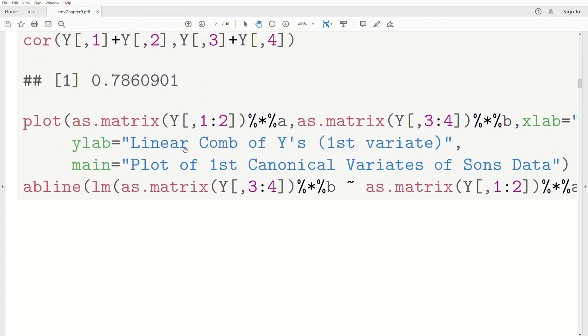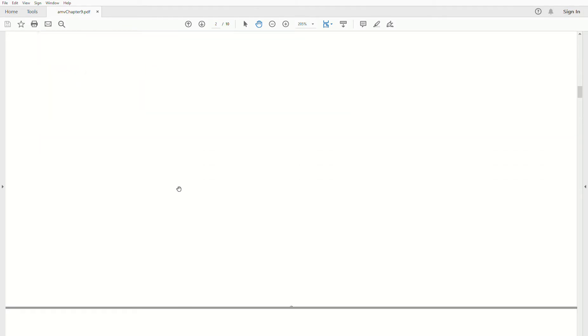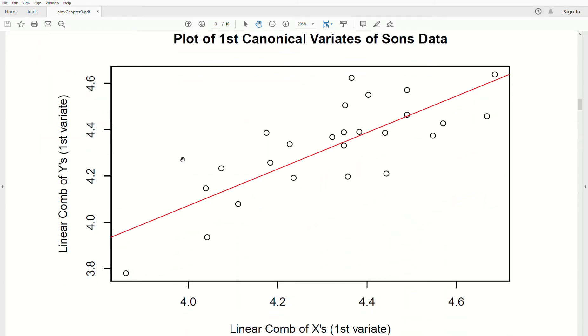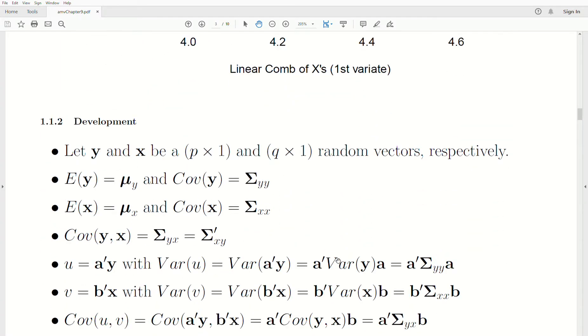So let's look at a plot between these variates. So this is the bottom is a linear combination of the Xs. Remember, we're taking the Xs times some number and adding them. So we get one variable. And so we plot it here. And this is the linear combination of the Ys. And this is it. And so this is the correlation between the two sets of variables.